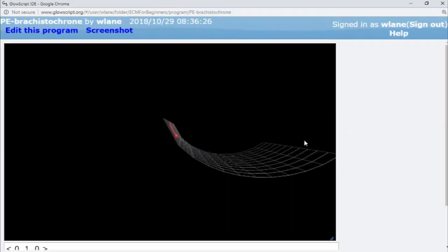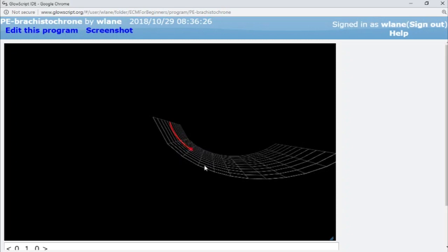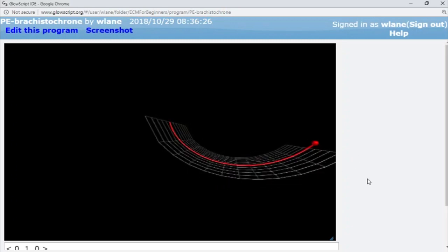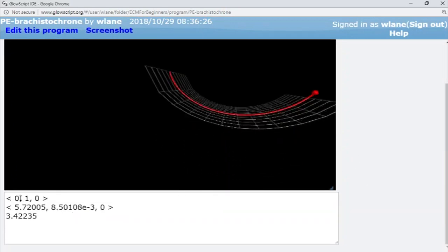You can see it actually goes beneath the point that it needs to end at, allowing the ball to pick up a little bit more velocity as it goes from left to right. So it's a little bit longer distance than the power law gives us, but it's actually the shortest possible time.